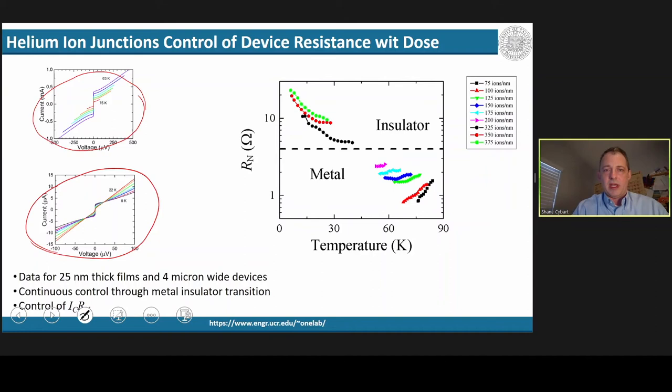And the big takeaway from this is we had a way now to tune the resistance of the Josephson junction by just controlling the amount of dose that we put into the sample. These Josephson junctions have metallic behavior, like most conventional high-TC junctions, whereas these junctions have that insulating behavior. And that really tells you with confidence that we're making two nanometer or so features inside the devices.